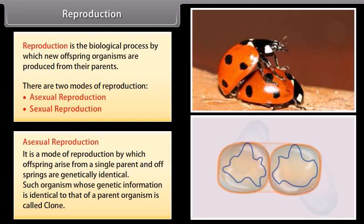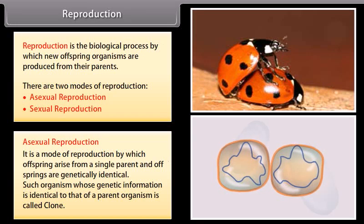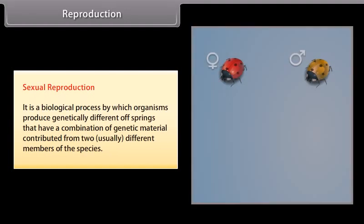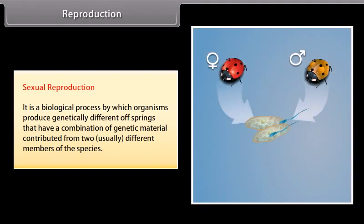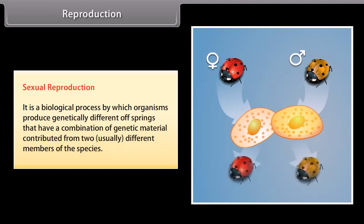Such organisms whose genetic information is identical to that of a parent organism are called clones. Sexual reproduction is the biological process by which organisms produce genetically different offspring that have a combination of genetic material contributed from two usually different members of the species.